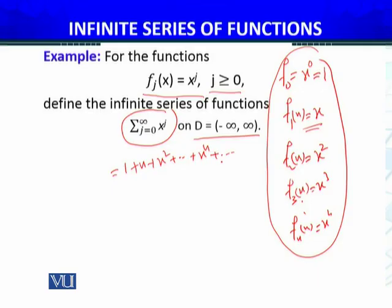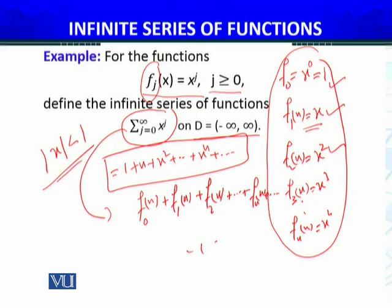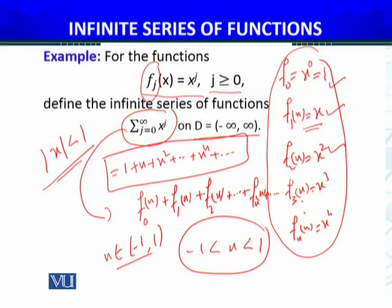We called this the geometric series in Analysis 1. We discussed it and saw that this series is convergent only when |x| < 1, meaning x ∈ (−1, 1). For x in that interval, the geometric series converges, and it converges to 1/(1−x). Since we are now writing the same geometric series in terms of functions, we will discuss point-wise and uniform convergence using new terminology.